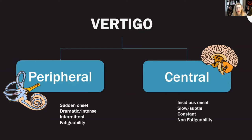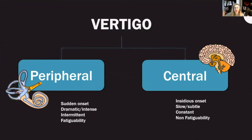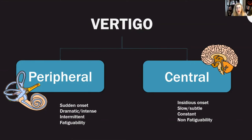Her table also says that peripheral causes are intermittent and the dizziness comes and goes, but that central causes are constant. However, BPPV — the most common and curable cause of peripheral vertigo — generally presents with 20 to 30 seconds of intense dizziness brought on by head movements. And vestibular neuritis, another peripheral cause, is the most common cause of constant vertigo where you see nystagmus at rest, with constant vertigo for many hours or days that is only worsened with head movements.